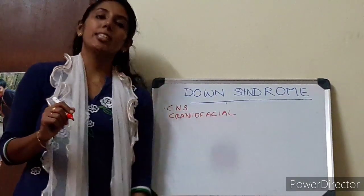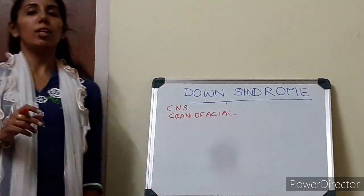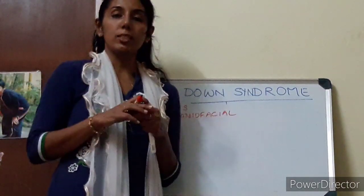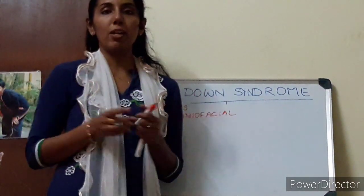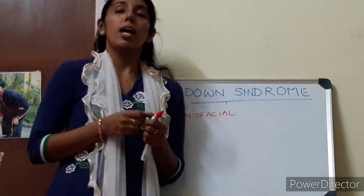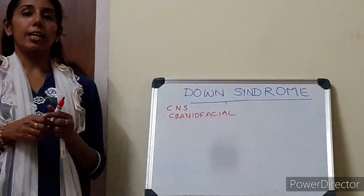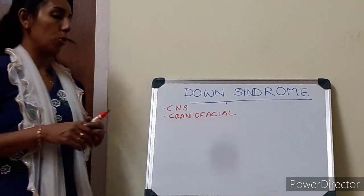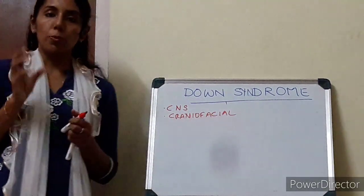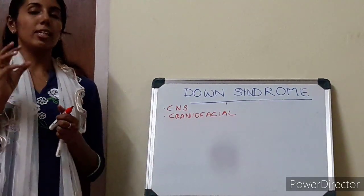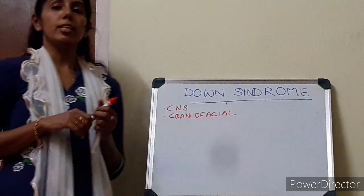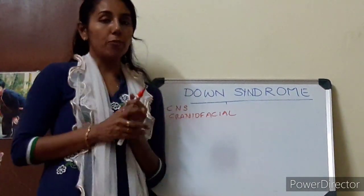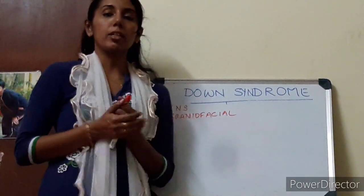Coming to the eyes, when we see the eyes of a child with Down syndrome, you will be able to notice the up-slanting of the eyes, the oblique palpebral fissure, epicanthal folds, and also Brushfield spots — they will have speckled irises from Brushfield spots. Ears tend to be a little dysplastic and low-set. The nose is small with a flat nasal bridge, which is very marked.